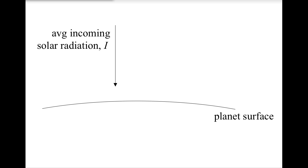But before we look at our planet, let's first consider a simple planet with just a surface and no atmosphere. Solar radiation comes in from the sun, and what happens?